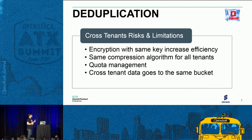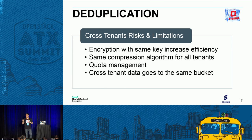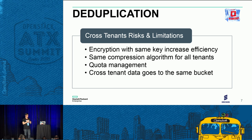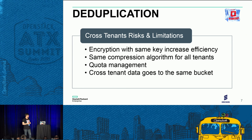The same compression algorithm needs to be used for all tenants, which would be transparent for users unless we implement something that automatically detects which compression algorithm was used for each block. Another issue is quota management, because with this approach data is shared across all tenants — knowing exactly which data set belongs to which tenant becomes complex, but that needs to be managed.